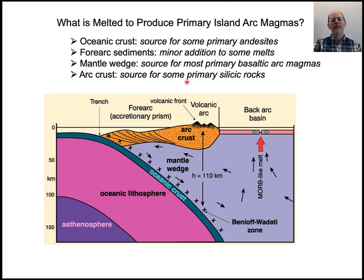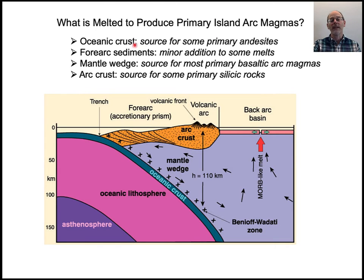If you look at the mantle wedge — that's this region right in here — that is the source for most primary basaltic arc magmas; that's where most of the melting occurs. There can be direct melting of the oceanic crust. Sediments do contribute to some of the melts, and there's reworking of material that occurs in the arc crust, and that's where the really silicic rocks come from.